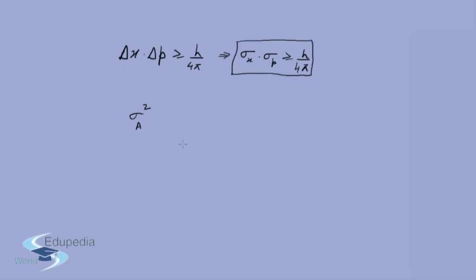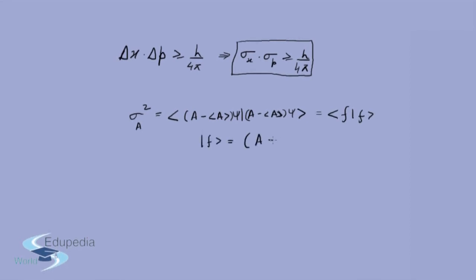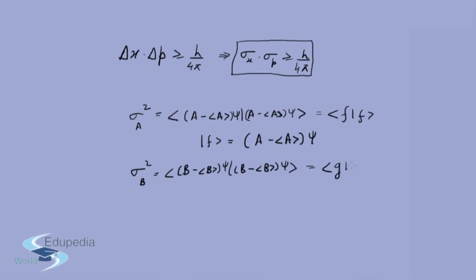Sigma A squared, which is the variance — remember sigma is the standard deviation — can be written as the average of (A minus the average of A) with the same thing, because we are taking the inner product of the difference of A from its average value. This can be written as the inner product of F with F, where F is (A minus the expectation value of A) times psi. Similarly for the second operator, sigma B squared equals the inner product of G with G, where G is (B minus the expectation value of B) times psi.